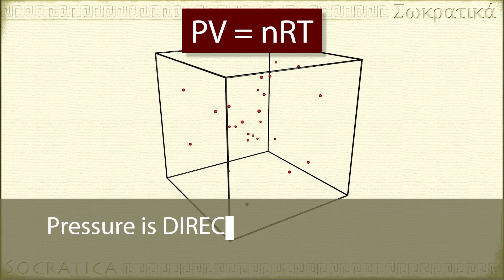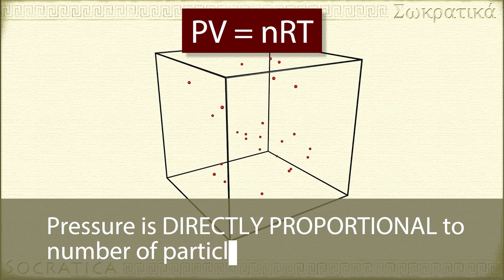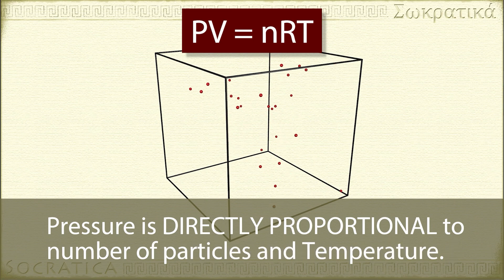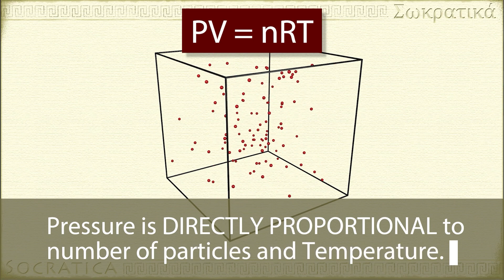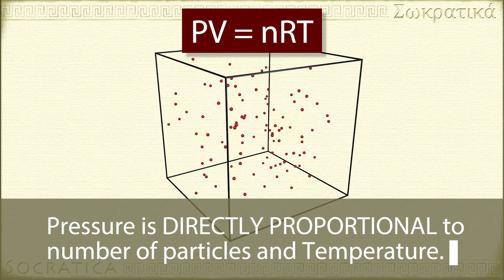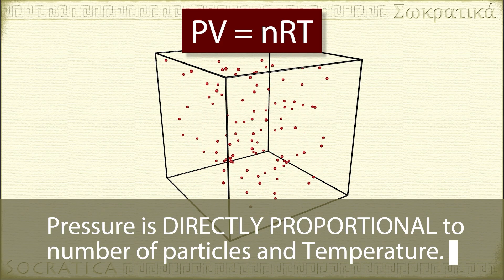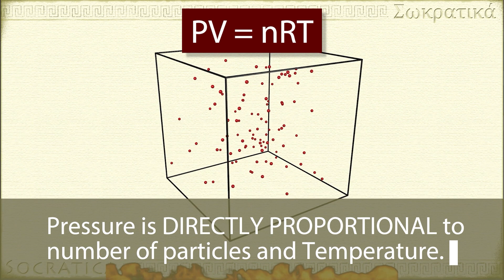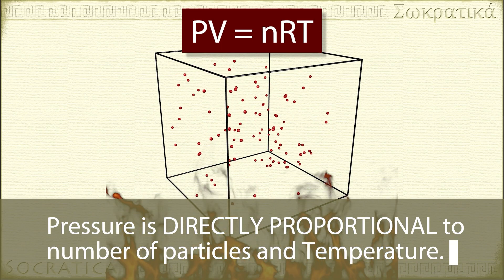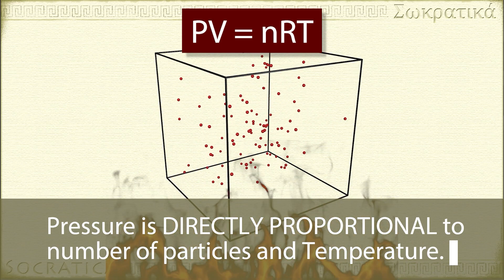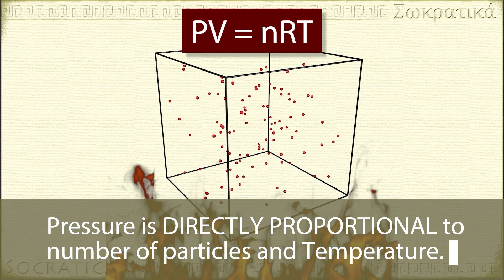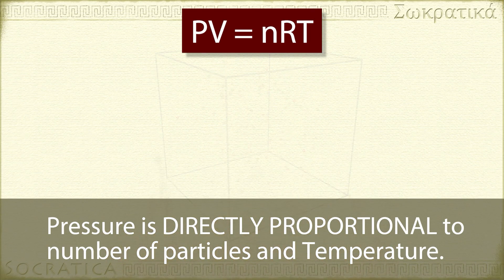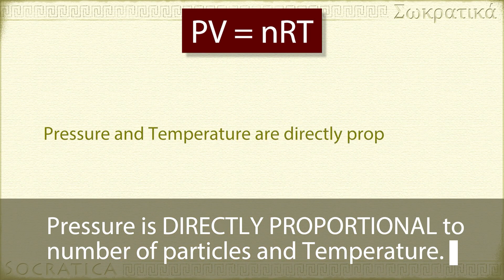Pressure is directly proportional to the number of molecules and temperature. If you add more molecules of a gas, they will bang around more on the container and exert more pressure. Similarly, if you increase the temperature of a gas, that increases its kinetic energy — it'll have more collisions per second against the container, which means the gas is exerting more pressure. So pressure and temperature are also directly proportional to each other.